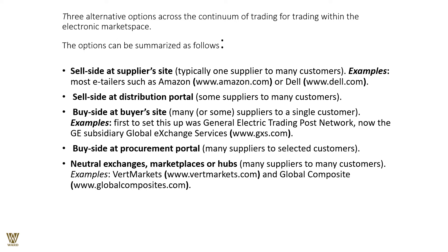Three alternative trading options exist in the electronic marketplace. Sell side: one supplier to many customers — for example Amazon.com or Dell.com, or a distribution portal. Buy side: many suppliers to a single customer — for example, General Electric's trading platform (Global Exchange Services, GXS). Neutral exchange or marketplace hub: many suppliers to many customers — for example, world markets or GlobalCompost.com. Companies can list products for sale and buyers can bid and make purchases.